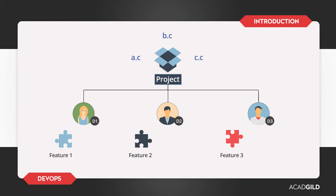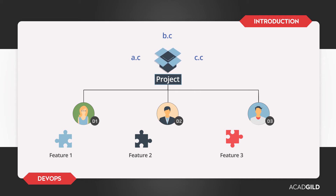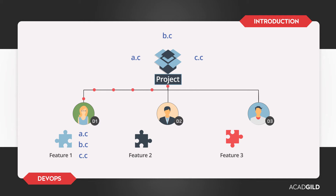All three files are present in a network location such that all three developers can access the files whenever they want. Developer 1 copies AC, BC, and CC files from the network location to his local drive. Developer 2 also copies AC, BC, and CC files from the network location to his local drive.